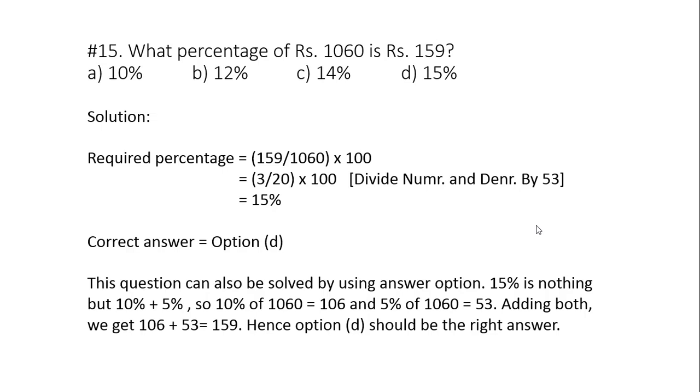However, this question can also be solved by keeping an eye on the answer option. For example, if we take option number D, 15 percent. 15 percent can be written as 10 percent plus 5 percent. Now what is 10 percent of 1060? It's easy. 10 percent is 106. Now what is 5 percent of 1060? 5 percent is simply half of 10 percent. So if 10 percent is 106, 5 percent will be 53. Now add both 106 plus 53, 159. So option number D gives us the right answer 159. None of the other option will give us the same answer. So correct answer option is D.